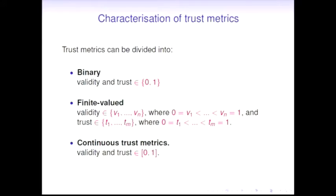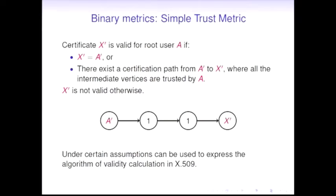First, we want to divide all the trust metrics by simply the codomain of them. The most simple case is binary, which is X.509 certificates. Then we have a finite amount of values where OpenPGP resides. The most general case we have are real values in the segment of 0 to 1.